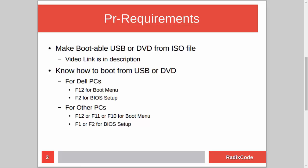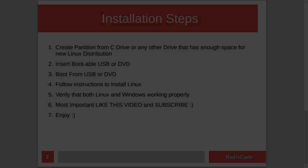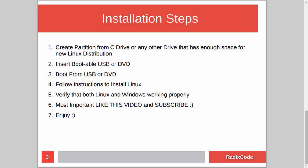The installation steps are very simple. First, we need to create an empty partition for our Linux distribution from the C drive or any other drive that has enough space. After this, we will insert our DVD or USB drive and restart the computer. Then we will boot from the USB or DVD drive and install our Linux distribution.